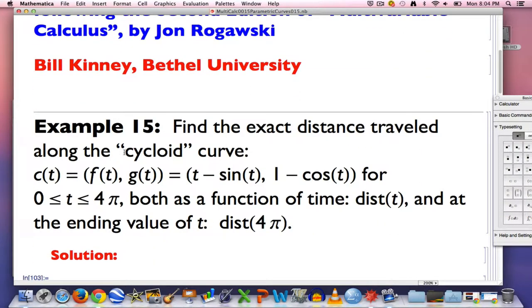Here is the example. We want to find the exact distance, emphasis on the word exact, traveled along this cycloid curve. The formula is right here. c of t is a point-valued function. The first coordinate is f of t, the second coordinate is g of t, t is time, you imagine. f of t is t minus sine t, and g of t is 1 minus cosine t. We're thinking about this over the interval from 0 to 4π.